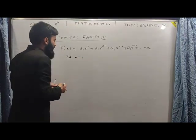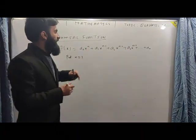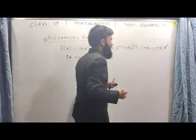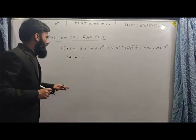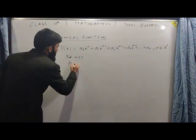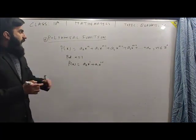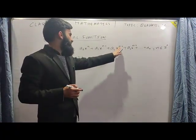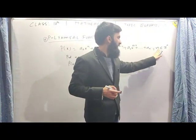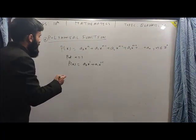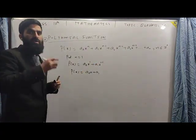Put n equal to 1. Here a₀, a₁, a₂, a₃ and so on are constants. Note that n should belong to the positive integers — n must be a positive integer. If we put n equal to 1, the output p(x) will be a₀x¹ plus a₁x^(1-1). Since 1 minus 1 equals zero, and going further would give a negative integer which violates our restriction.